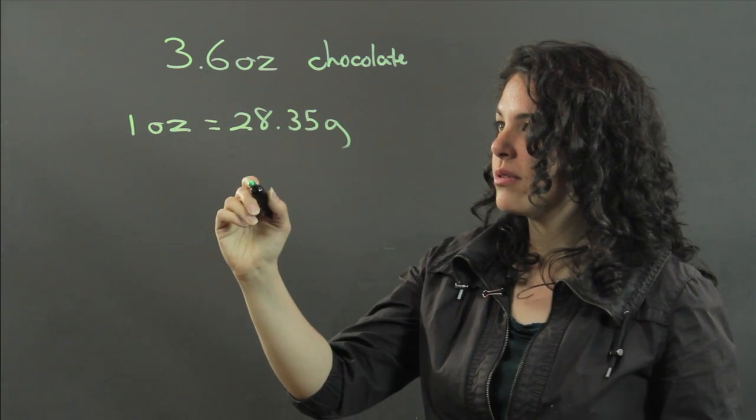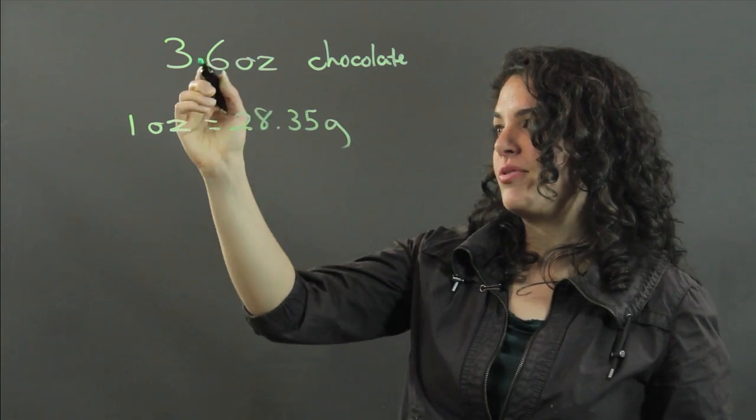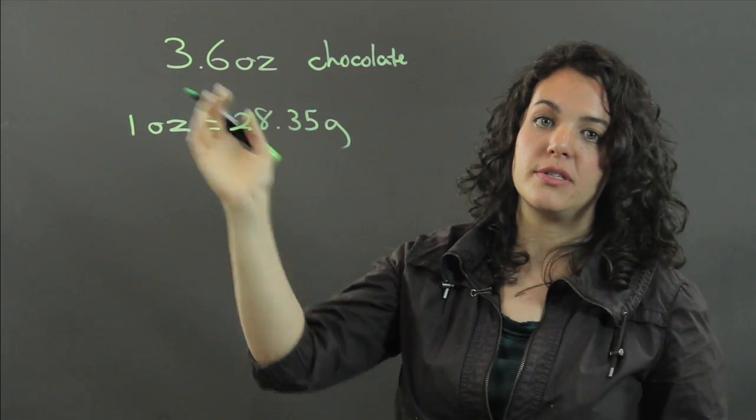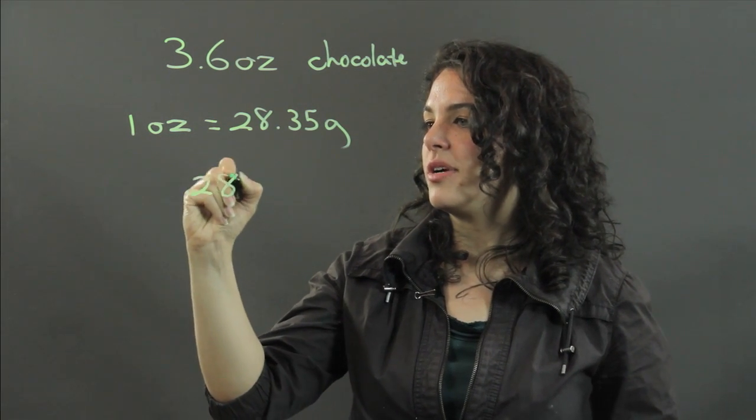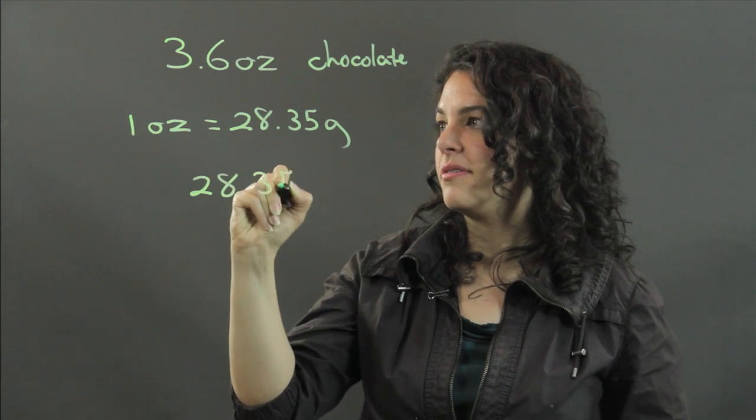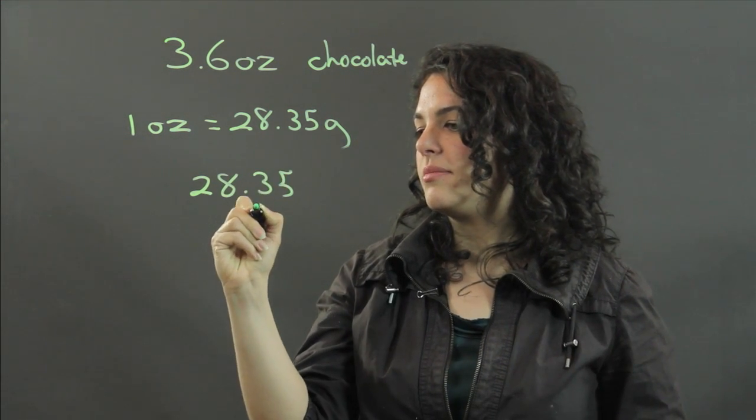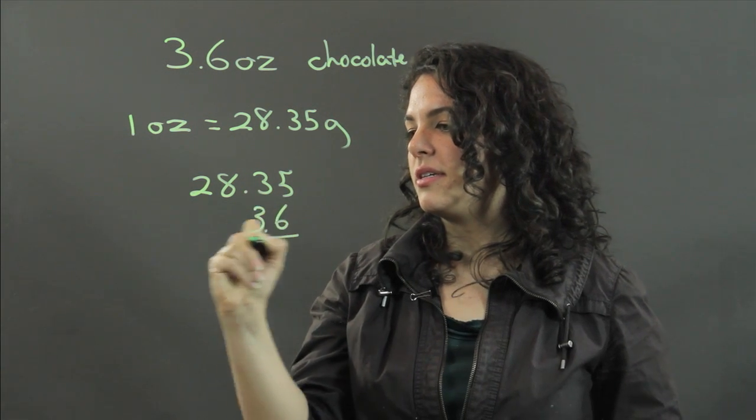So to find out how many grams are in 3.6 ounces of chocolate, we just have to multiply these two numbers. So 28.35 times 3.6.